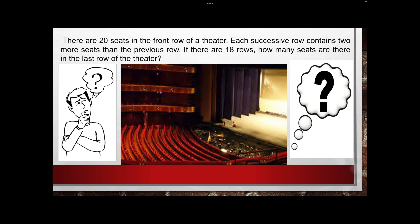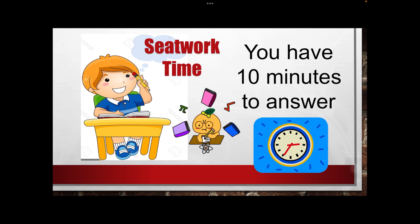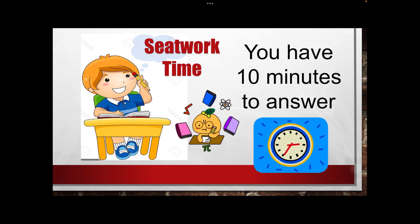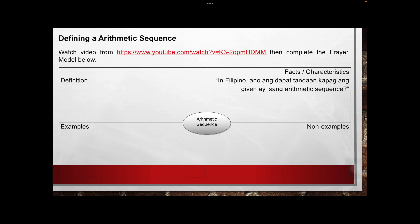We have 20 seats in the front row of the theater. Then each row contains 2 more seats added compared to the previous row. If there are 18 rows in the theater, how many seats are there in the last row, which is the 18th row? Your seat work time will be 10 minutes to answer.